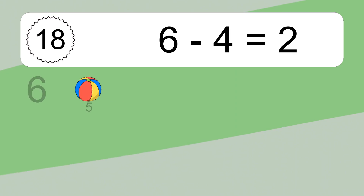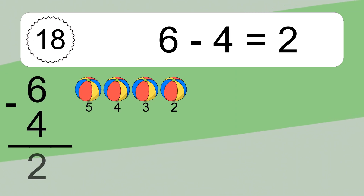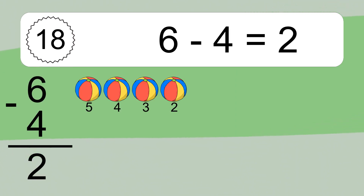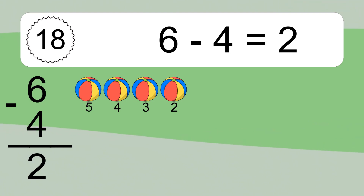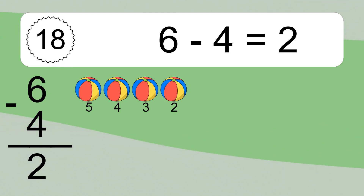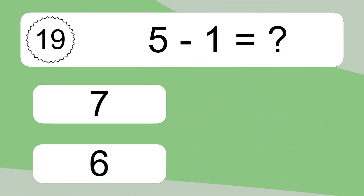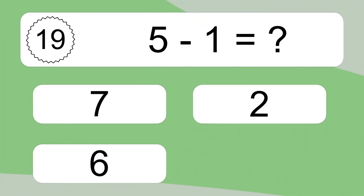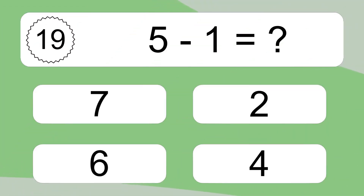6 minus 4 equals what? 6 minus 4 equals 2. Let's count it: 5, 4, 3, 2.